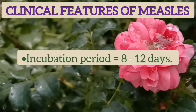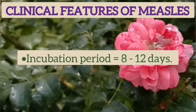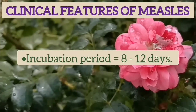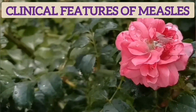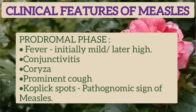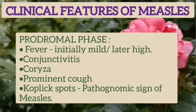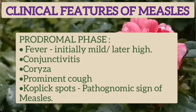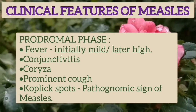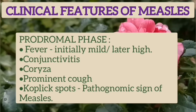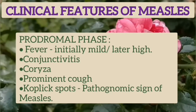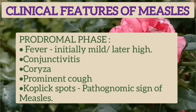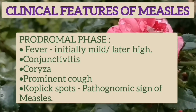The clinical features of measles: the incubation period is 8 to 12 days. In the prodromal illness, there is fever which is initially mild and later high, conjunctivitis, coryza, prominent cough, and Koplik spots which are pathognomonic signs of measles.